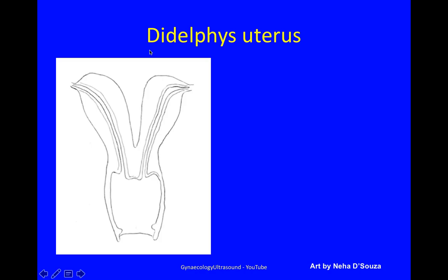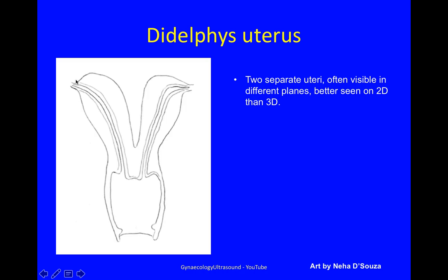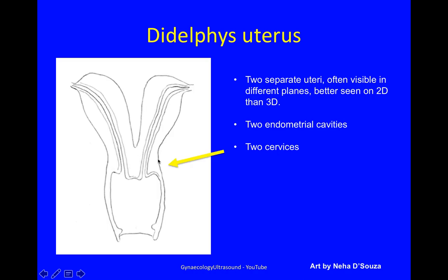This is a uterus didelphus — two separate uteri, often visible in different planes and often better seen on 2D than 3D. Two endometrial cavities, two cervices — they can be in one body or slightly separate — and two interstitial portions of the fallopian tubes.